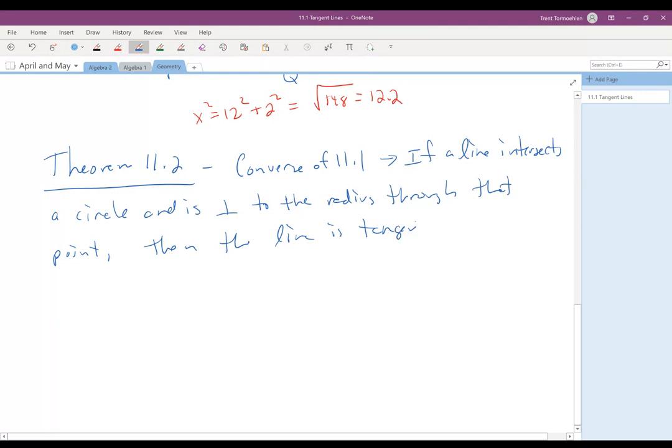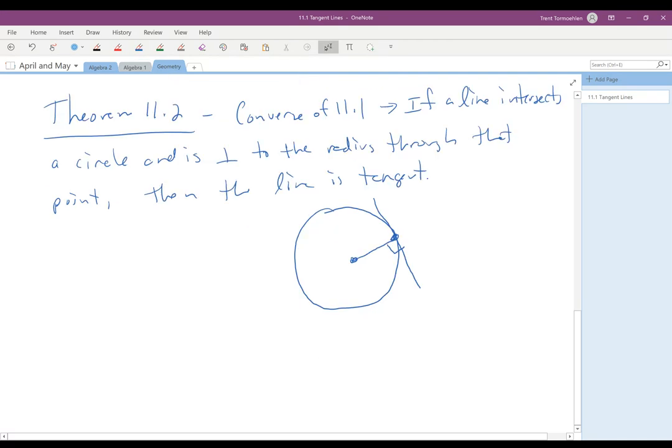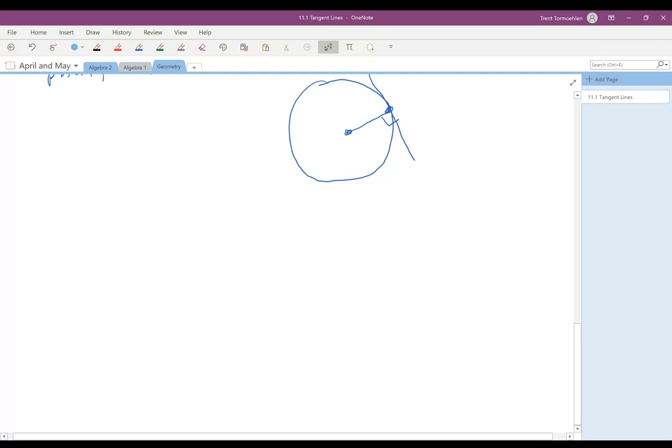then the line is tangent. And so basically what that says is if we're not sure that the lines are tangent to each other, but we do know that we have a right angle between the radius and that line, then we know that this is a point of tangency and that it doesn't intersect it at more than one point. And then the more important one, the one that we'll spend, also will get used a lot, is theorem 11.3.